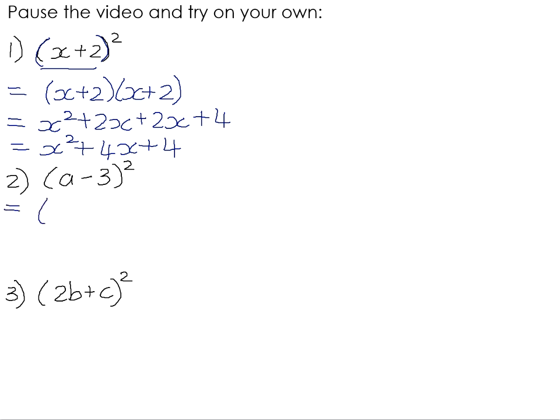a minus 3 all squared means a minus 3 multiplied by a minus 3. If we again do FOIL, a times a is a squared. Now if you like, if you can see what happens, you land up with two middle terms that are exactly the same. Your outers will give you negative 3a and your inners will give you negative 3a, so altogether you're going to have negative 6a. If you're comfortable to do that, you can actually add the like terms straight away. And then negative 3 times negative 3 is positive 9.